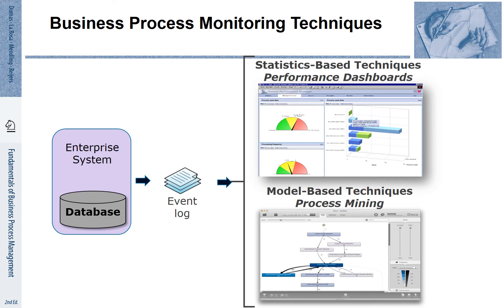The first category of approaches is based on statistics — this is the approach taken by performance dashboards, which visualize different performance aspects of a process using charts. Model-based techniques give priority to the process flow; this is the approach taken by process mining, where the process flow is visualized with diagrams that make it easy to understand how work is flowing through the process.